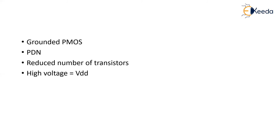Because in NMOS, we will be having only NMOS structures — NMOS fits both in your pull-down network and in the place of your pull-up network. Whereas in Pseudo, that is a false version of your NMOS logic style, here we will be having a gate that will be connected to ground.